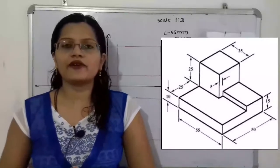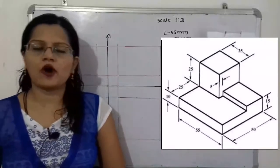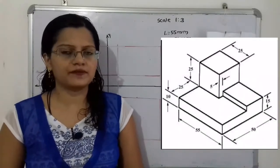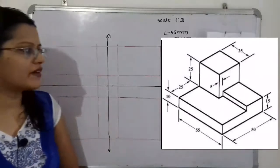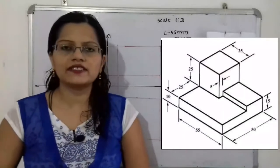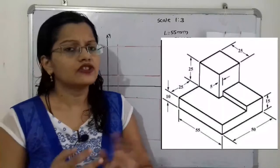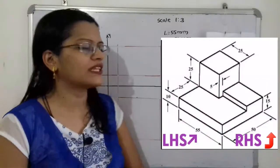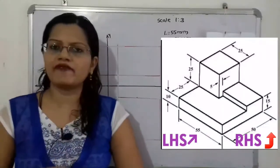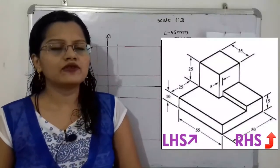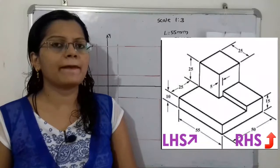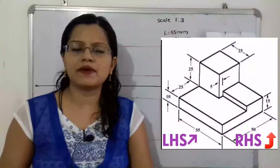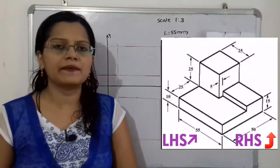Hello friends, this is Priyanka. Today we are going to solve a problem on orthographic projection by the first angle projection method. If we observe the given diagram, there are two sides: the right hand side with a length of 50 millimeters and the left hand side with a length of 55 millimeters. We have to choose the front view for the maximum length, so the left hand side at 55 millimeters is selected.